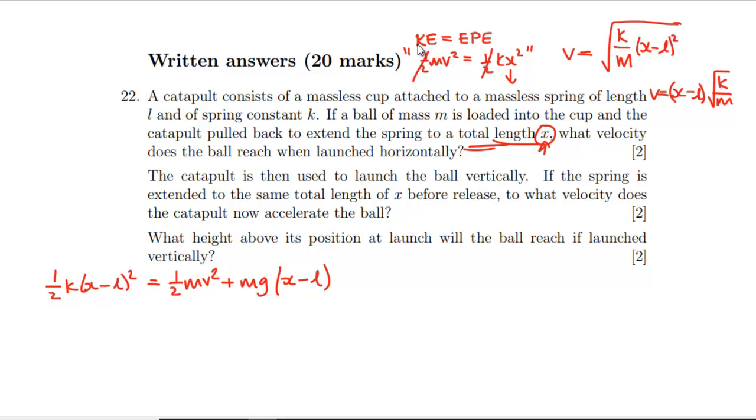We've just got to rearrange all of this for v². Let's multiply everything by 2 over m. So k/m(x-l)² equals v² plus 2g(x-l). That means v is the square root of k/m(x-l)² minus 2g(x-l).